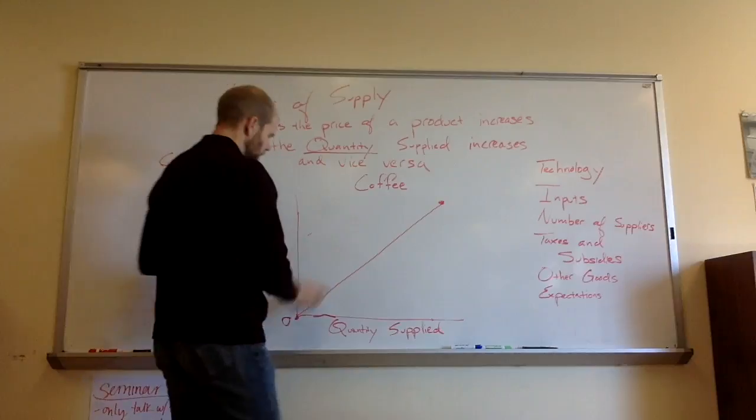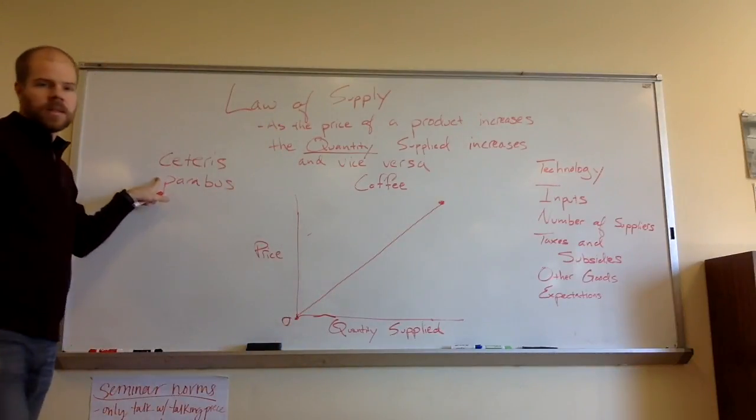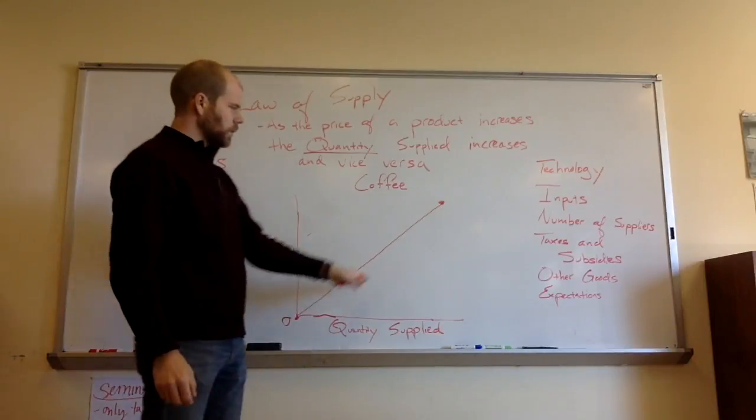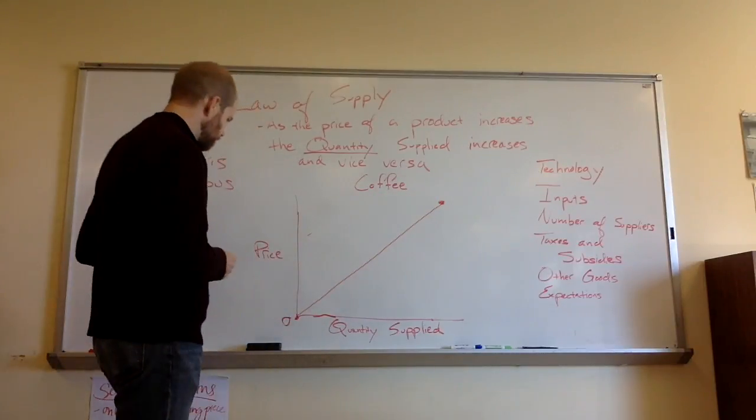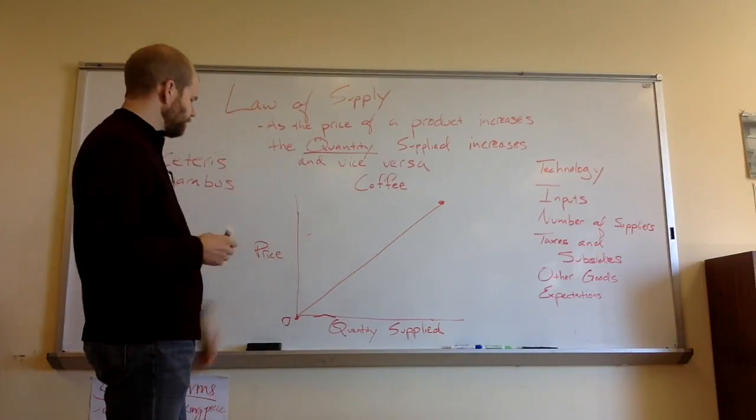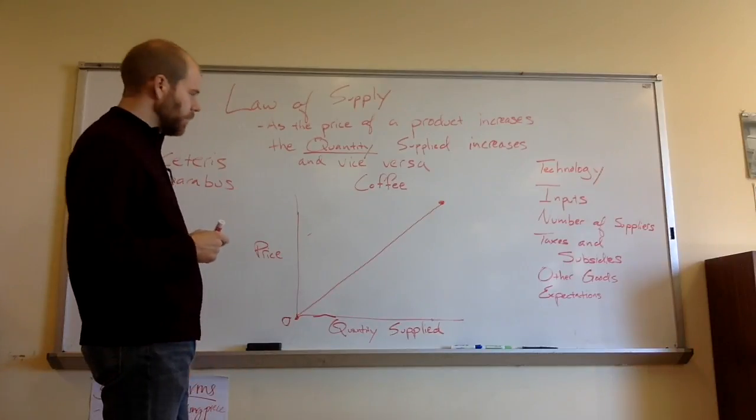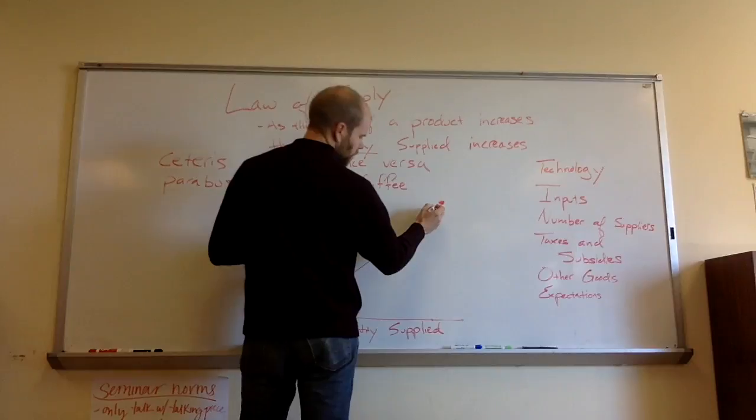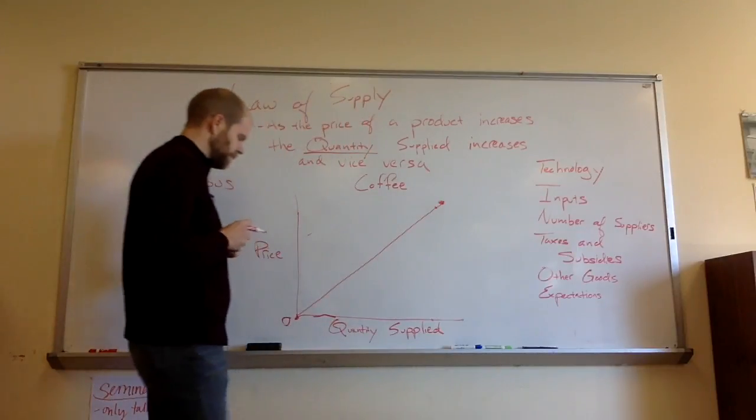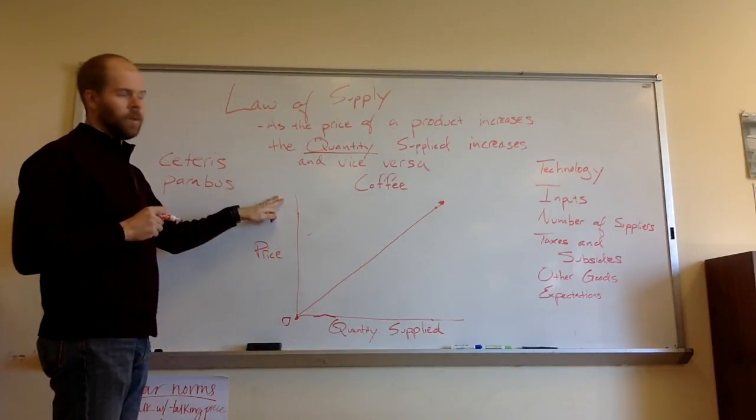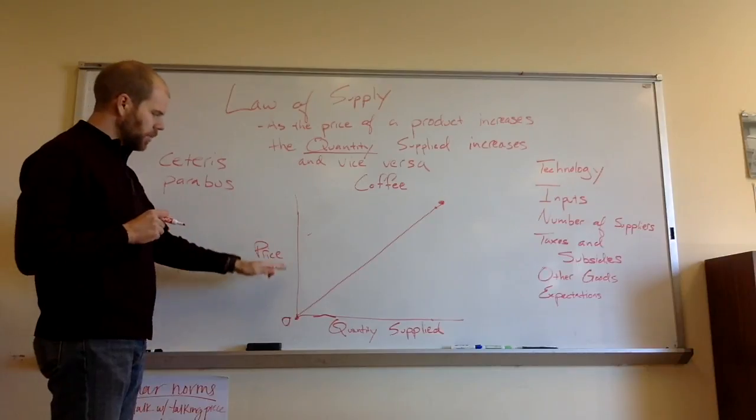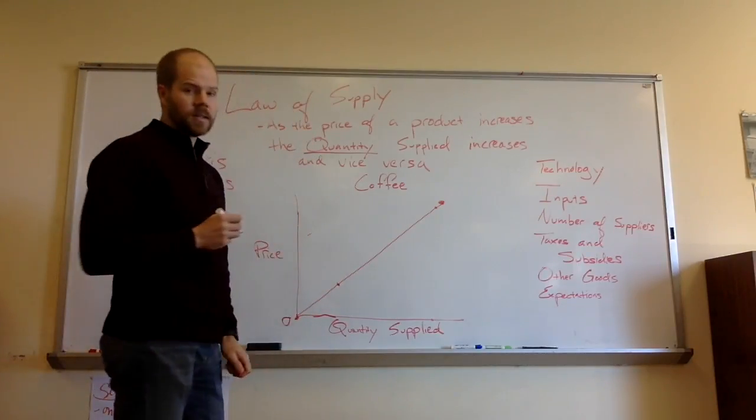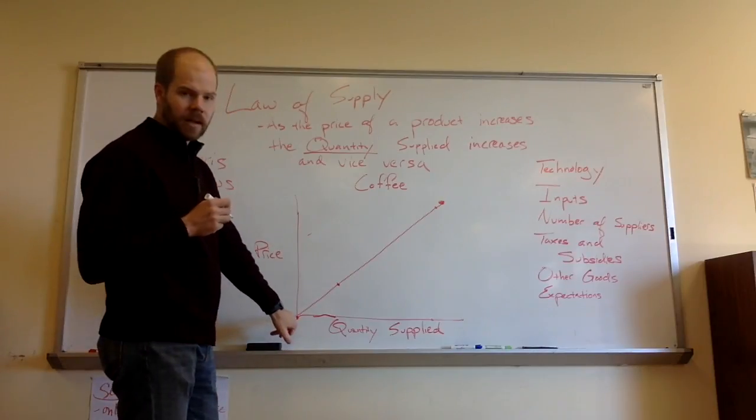Again, ceteris paribus, all other things being equal, a change in price moves us along this curve. If I'm selling coffee and people are willing to pay a higher price for it, I would like to supply a large quantity of it. And as people are willing to pay less and less for their coffee, I am simply willing to supply less of that coffee until eventually I might get out of the coffee business.